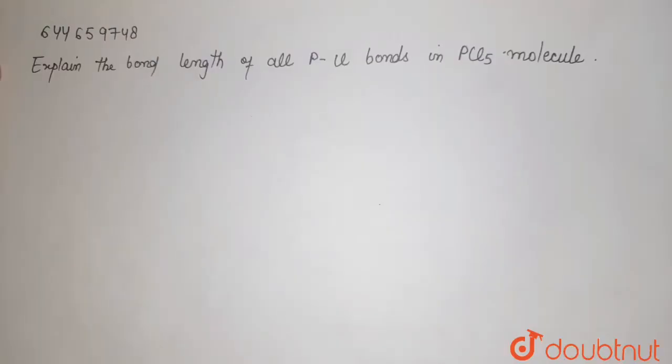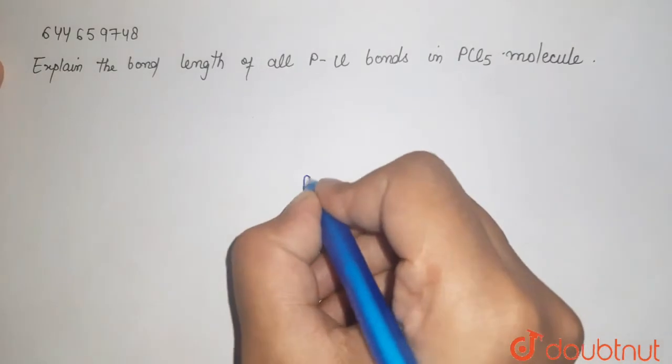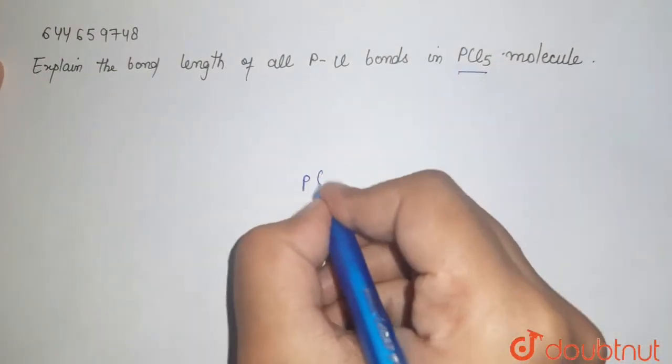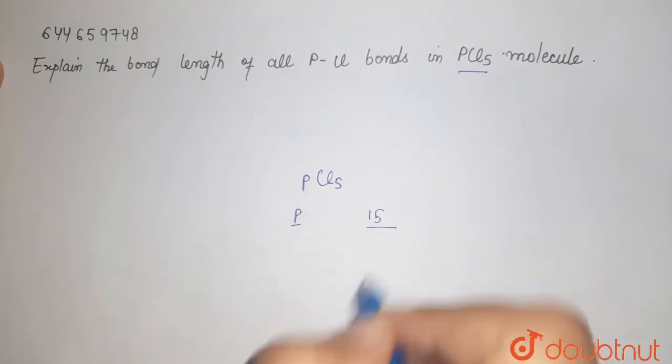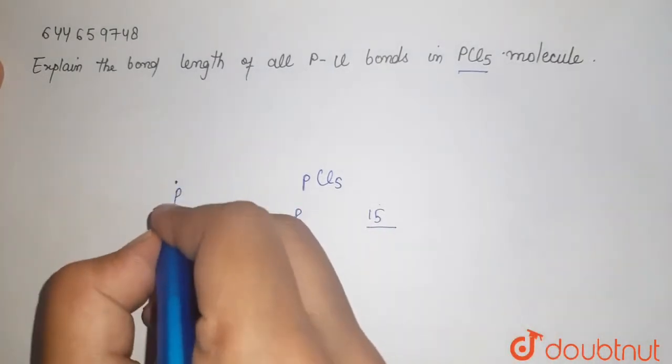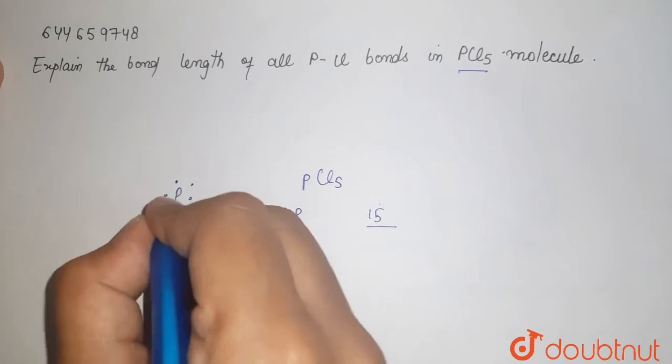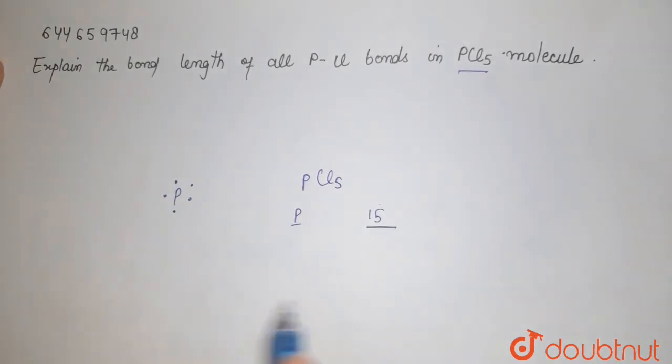If you see PCl5, it looks like this. Phosphorus belongs to group 15, so it has 5 valence electrons: 1, 2, 3, 4, and 5. There are 5 chlorines: 1, 2, 3, 4, and 5.